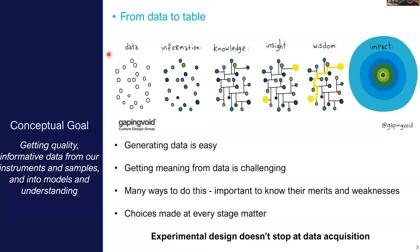We know that there are lots of different data processing pipelines, but you need to understand which ones are more suited to different applications. The choices that you make at each stage do matter at every inference you'll make downstream. One thing to stress is that your experimental design doesn't stop when you acquire the data — your experimental design has to factor in data processing, data analysis, and not just how you actually generate the samples up front.